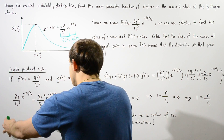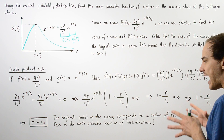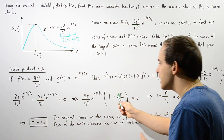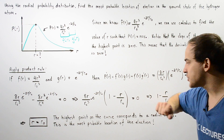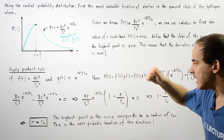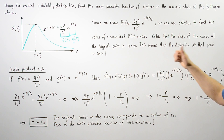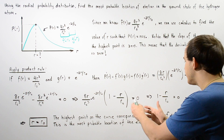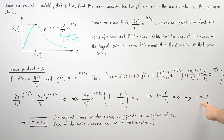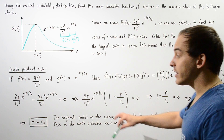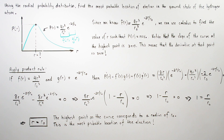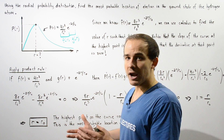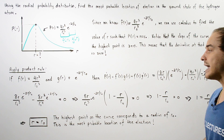We factor out the common terms: 8, r, r₀³ in the denominator, and e^(−2r/r₀), leaving the factor (1 − r/r₀) = 0. Dividing both sides by the common factor, we get 1 minus r divided by r₀ equals zero, which gives r divided by r₀ equals 1. Multiplying both sides by r₀, we find r equals r₀ — the Bohr radius, 5.29 times 10 to the negative 11 meters. This is the most probable location of the electron.